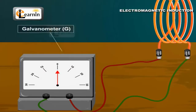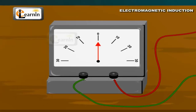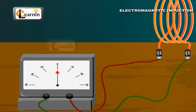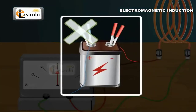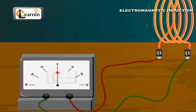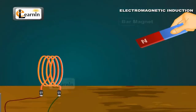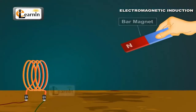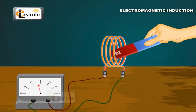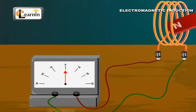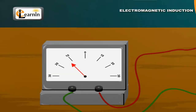This closed circuit contains no source of electricity and the galvanometer shows zero reading initially. Take a bar magnet NS and move it swiftly towards the coil with its north pole facing the coil. You will observe a deflection in the galvanometer when the magnet is moving. The deflection indicates that current is set up in the coil.